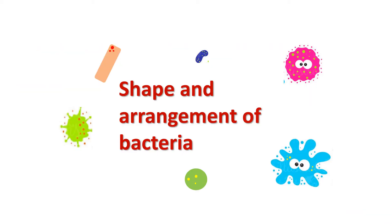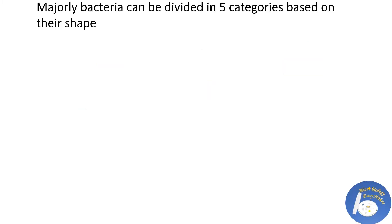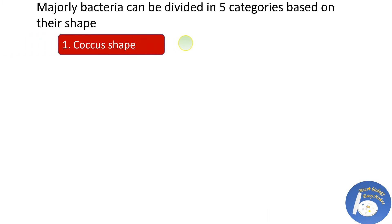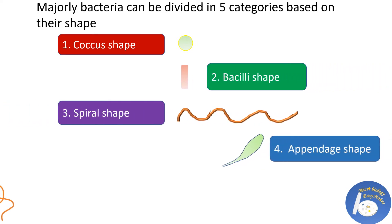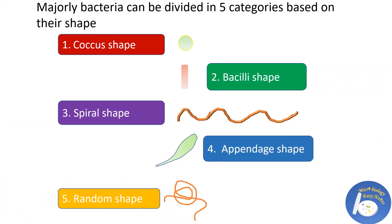Now, the shape and arrangement of bacteria. Bacteria can be divided into 5 major categories based on their shape: 1st is Cocci shape, 2nd is Bacilli shape, 3rd is Spiral shape, 4th is Appendaged shape, and 5th is Random shape.